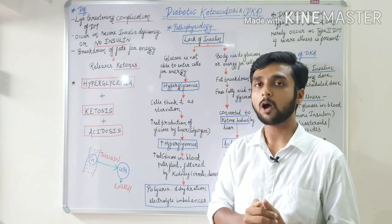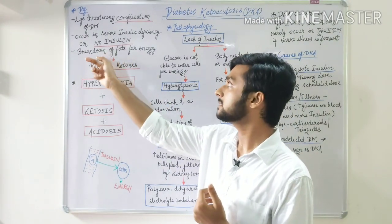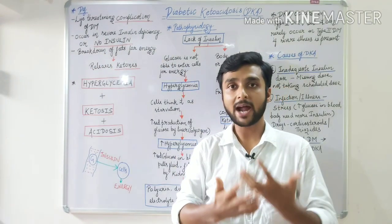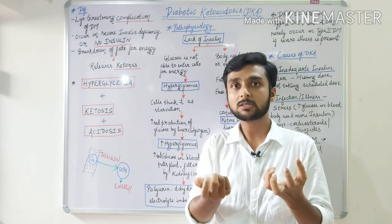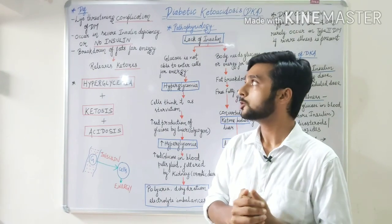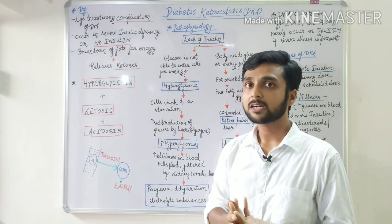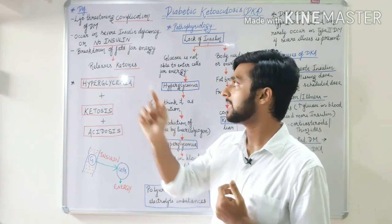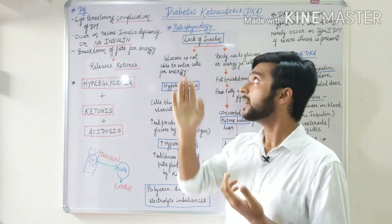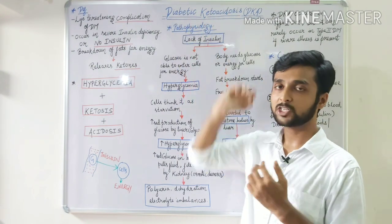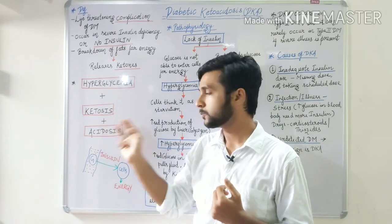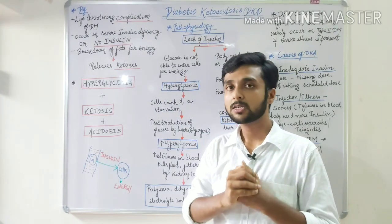So what happens next? There will be a breakdown of stored fats in our body for energy. All the fat stored in our body starts breaking down so that energy can ultimately be produced. When fats break down, the end product we get will be ketones — and that is how this condition got its name: diabetic ketoacidosis.